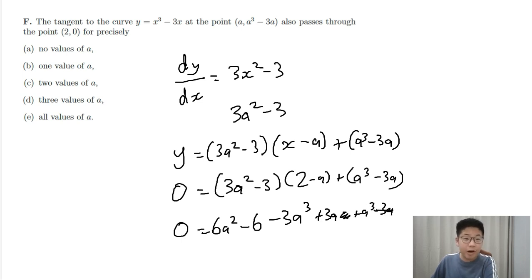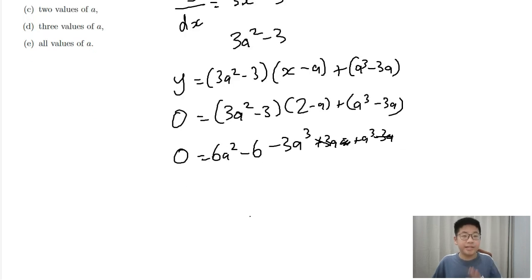Then we cancel out all the like terms. I may be thinking yeah, I'm a bit evil, but actually we are doing this for mathematical purposes. And then we get negative 2a cubed plus 6a squared minus 6.